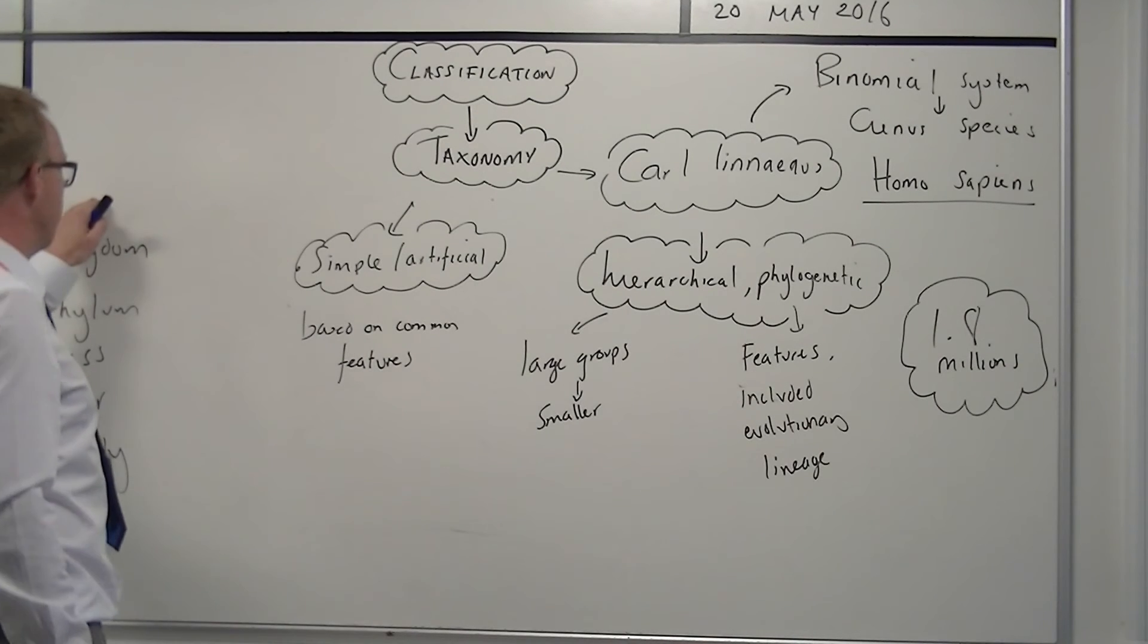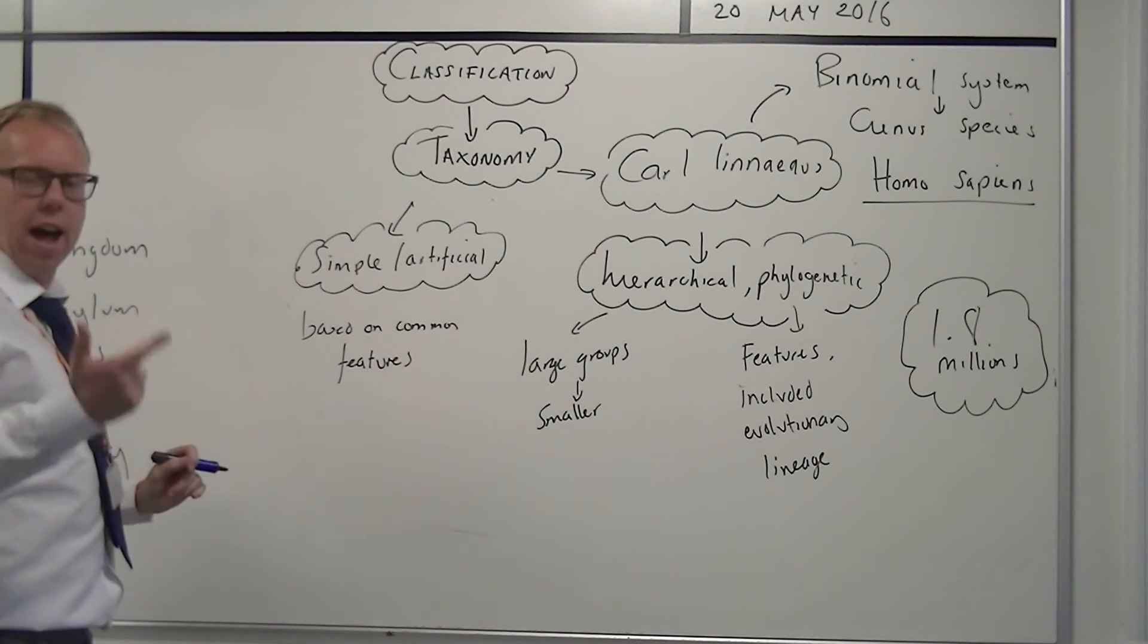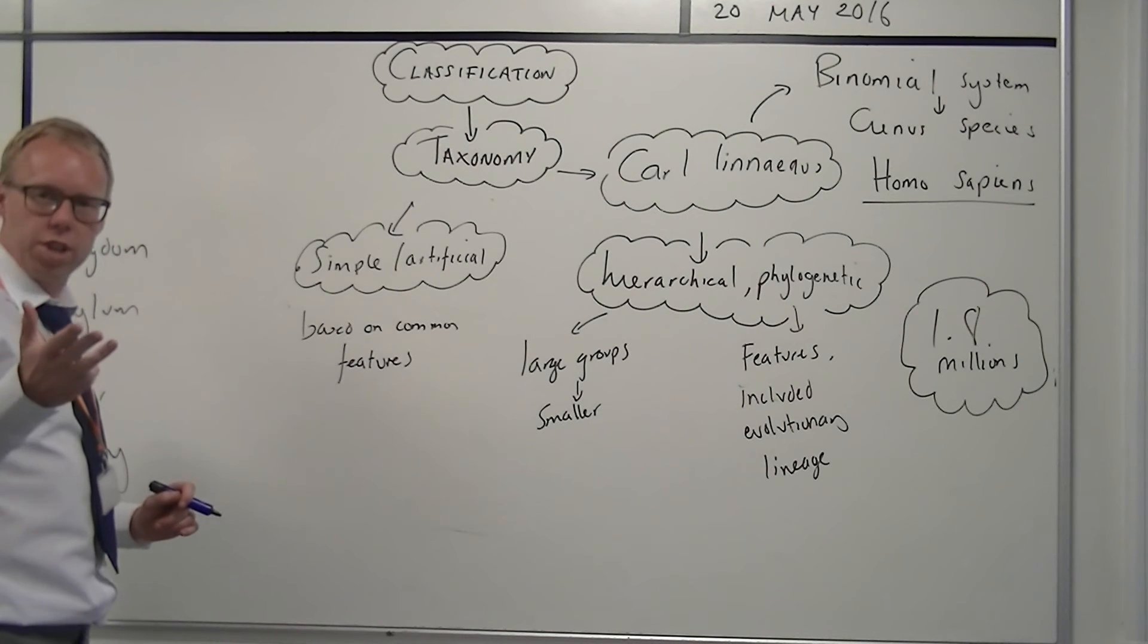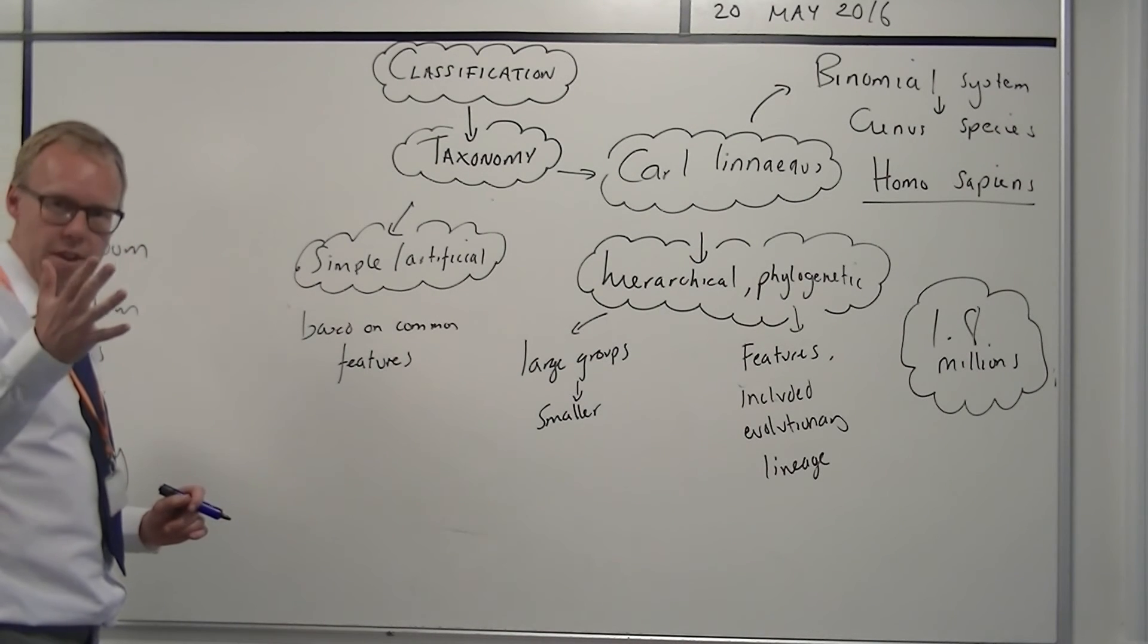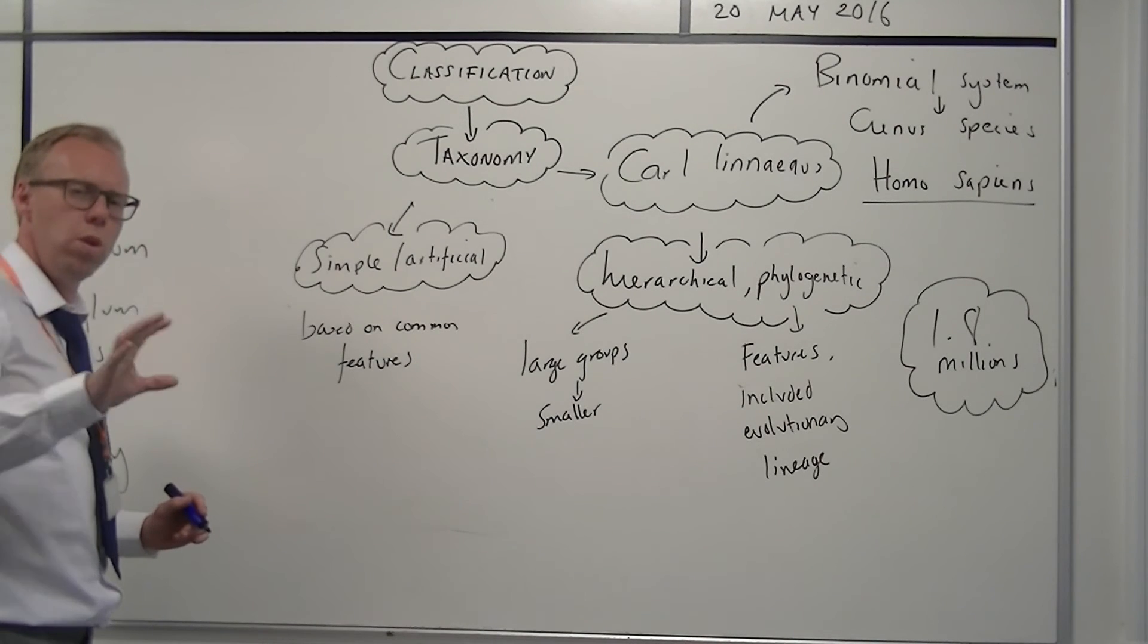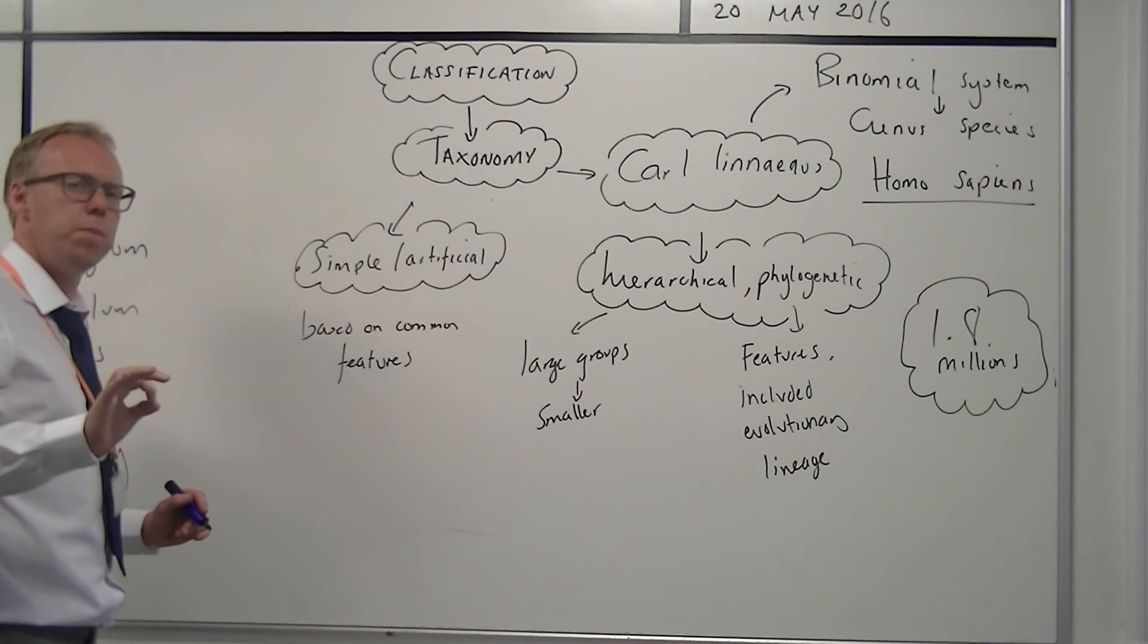We used to have five kingdoms. The five kingdoms were plant, animal, fungi, protoctista, and bacteria. But we've had to change that, because the bacteria that we put into one kingdom, we've found, should not be together.